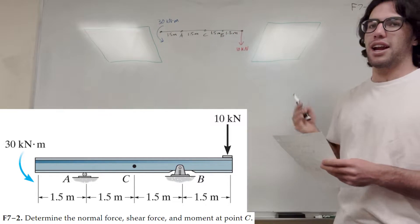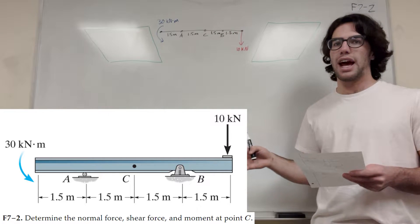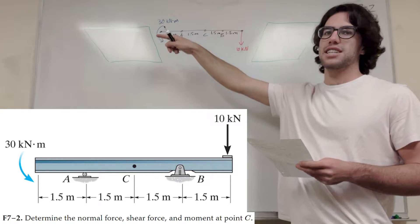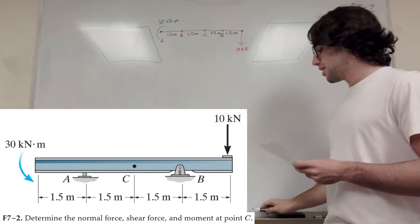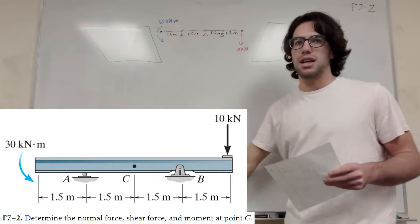So I went ahead and drew this basic free body diagram. It's not done yet, so we're going to fill it in now. We have this 30 kN per meter moment force acting on the beam, and we also have this 10 kN force acting on the beam, and we have A, B, and C. We're trying to find it at C, and there's no support at C, but there are supports at A and B.